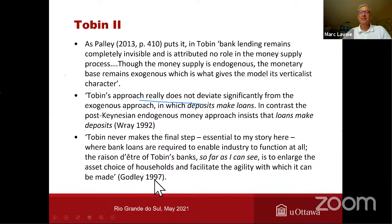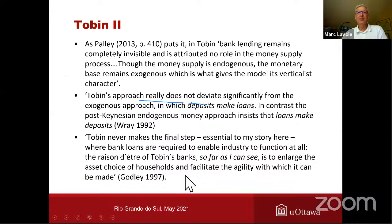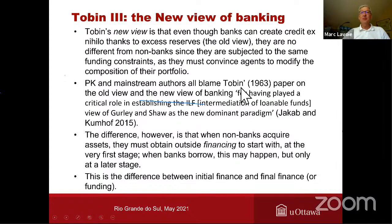Randall Ray in his 1992 article says something similar: Tobin's approach really does not deviate significantly from the exogenous approach in which deposits make loans, in contrast to the post-Keynesian endogenous money view which insists that loans make deposits. So Tobin is still headed the other way around. This was recognized by Godley, who said in his 1997 working paper that Tobin never makes the final step essential to his story — where bank loans are required to enable industry to function at all. The raison d'être of Tobin's banks, so far as Godley could see, is to enlarge the asset choice of households.